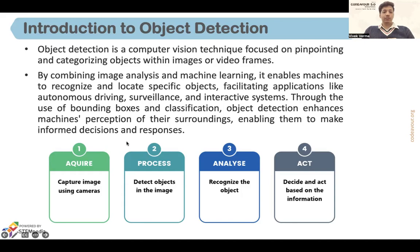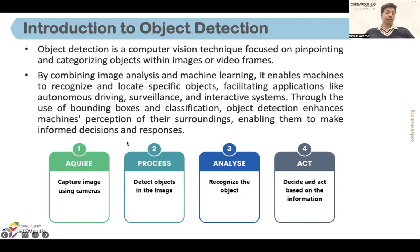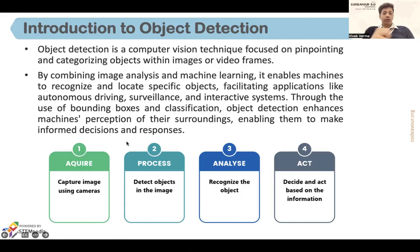It's basically computer vision, because we are giving machines the technique of pinpointing or categorizing objects within images or video frames. If I click an image of my desk setup and run it through an object detection model, it will be able to detect multiple objects — like water bottle, phone, candle, Pocky, pen, pen stand, calendar. So these are things it will be able to detect. Basically there are four steps followed in object detection.